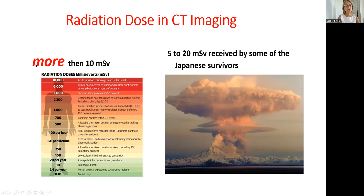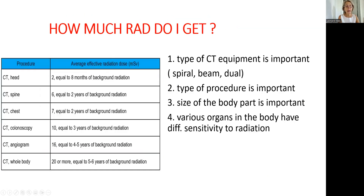In general, a person gets more than 10 mSv, and I will talk about that in a second. Keep in mind that Japanese atomic bomb survivors received between 5 to 20 mSv of radiation during the event. Now, why do I say 'in general,' and why can nobody tell you exactly how much radiation a person gets during CT scanning?